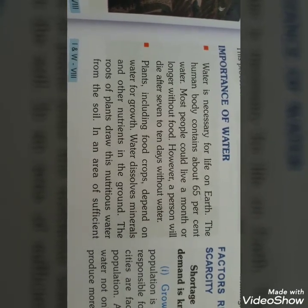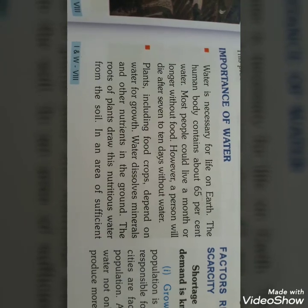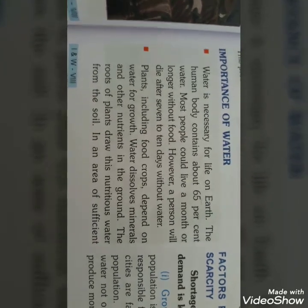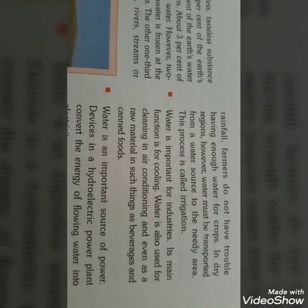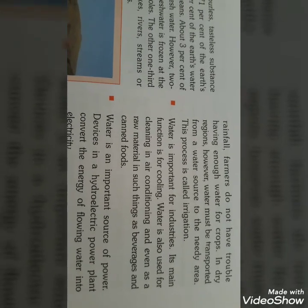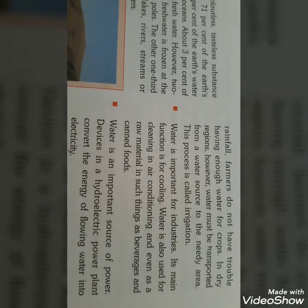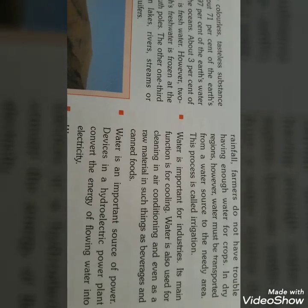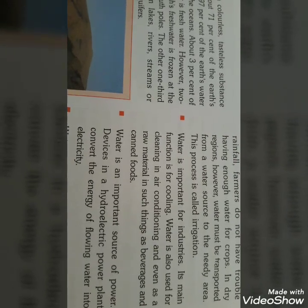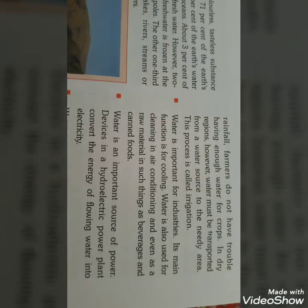Plants और crops सभी को अपनी growth के लिए पानी की ज़रूरत है। पानी में ऐसे minerals और nutrients होते हैं जो फसल उगाने में बहुत ज़्यादा important होते हैं। जहाँ rainfall proper नहीं है, वहाँ water bodies से पानी ले जाकर खेती के areas तक पहुँचाया जाता है — इस process को irrigation बोलते हैं।